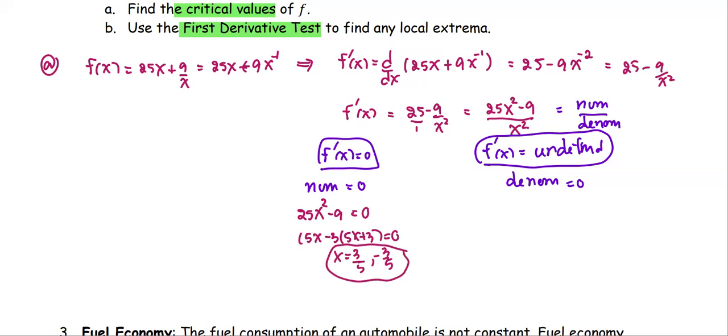The denominator x squared equals 0, leaves us x equals 0, but we cannot use it, because the function f(x) is not defined at x equals 0, so we toss it away, so down to two numbers for the critical value.